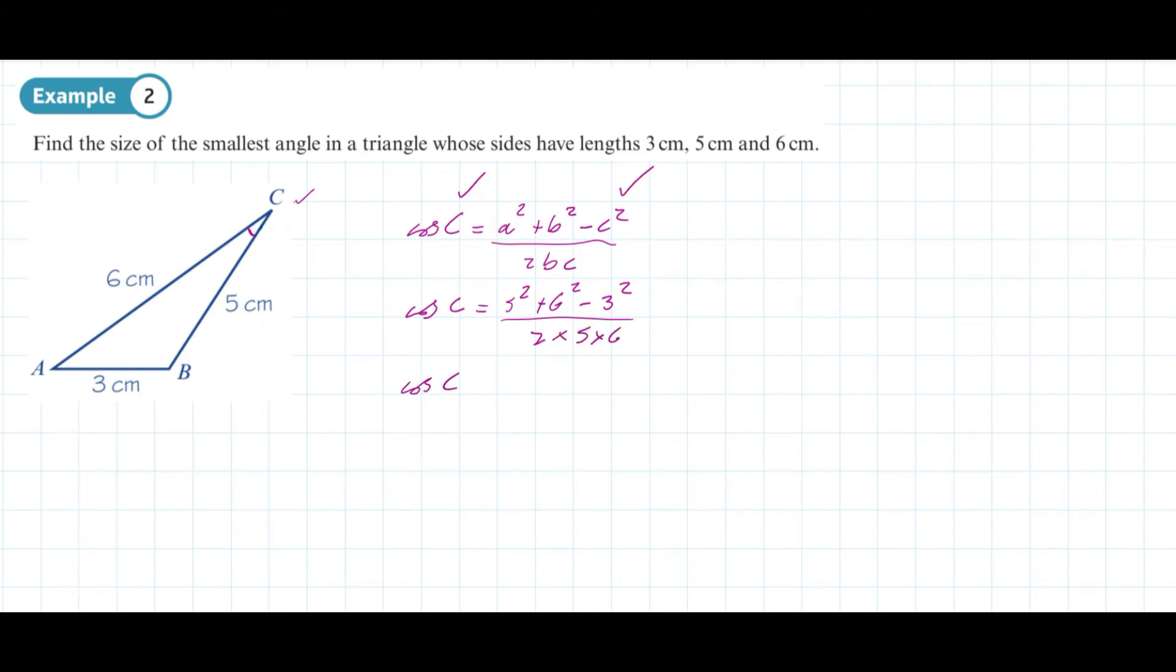Cosine C equals 25 plus 36 minus 9 over... 5 times 6 is 30, times 2 is 60.